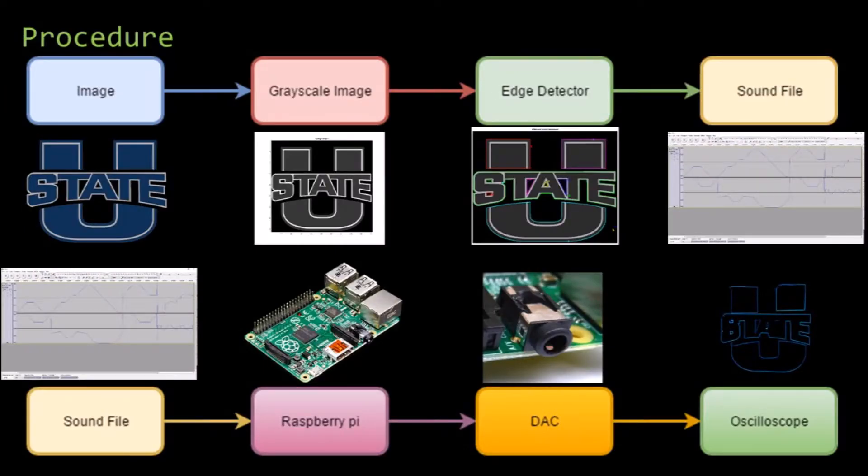Here is the procedure with an example image. The Utah State logo is loaded into the program and converted to grayscale. The program detects the edges of the image, produces XY coordinates, and then converts those coordinates into a sound file. The sound file is loaded onto a Raspberry Pi and the audio output produces the original image on the oscilloscope.